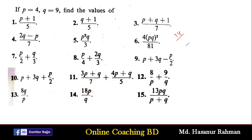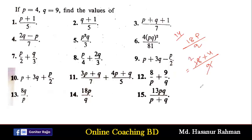Now number 14 says 18p/q. So 18 multiplied by p which is 4, divided by q which is 9. We divide 18 by 9 to get 2, so 2 multiplied by 4 equals 8. That is the answer of number 14.